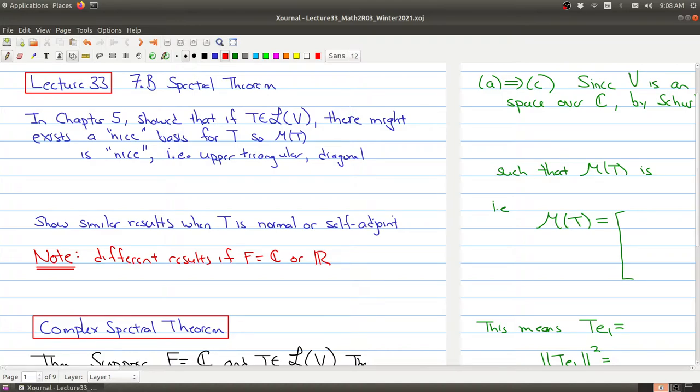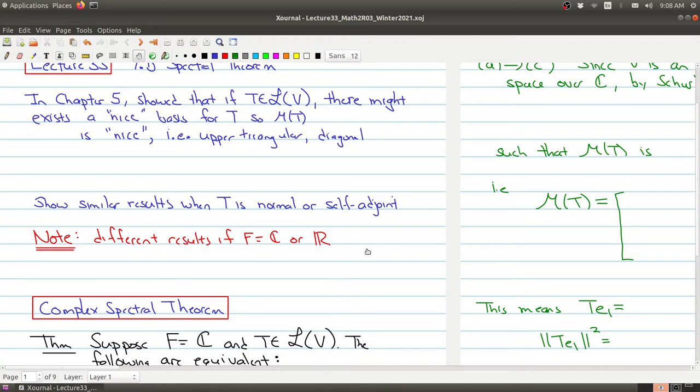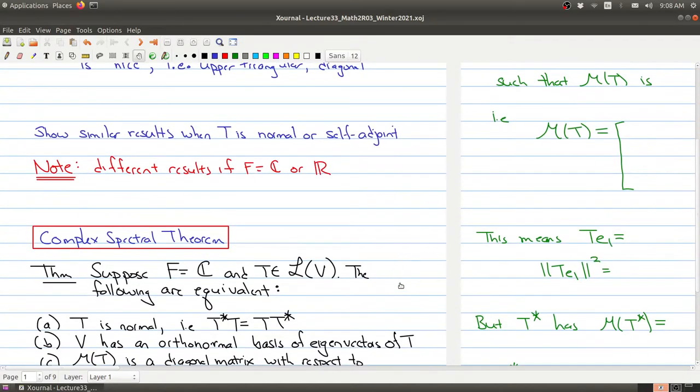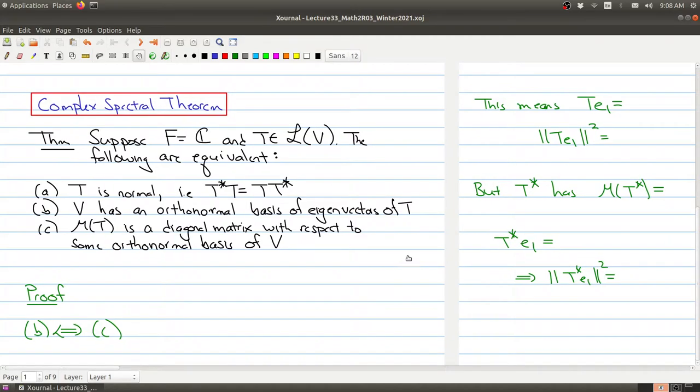But definitely this sort of thing pops up when you're dealing with inner products because when you're dealing with inner product spaces, you have to really pay attention whether you're using the complex numbers or the real numbers. So just pay attention that there are two different results. We're going to start with the complex case where we're going to look at the complex spectral theorem.